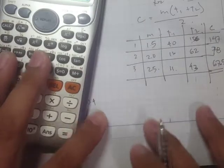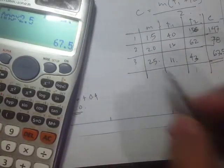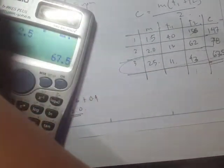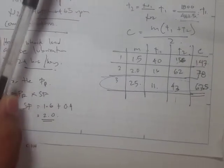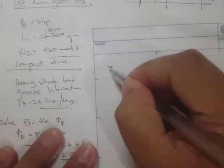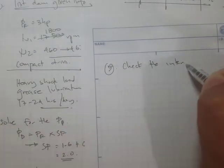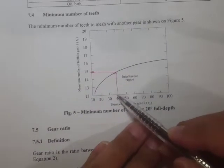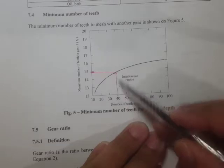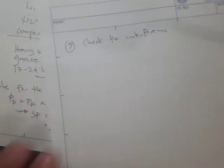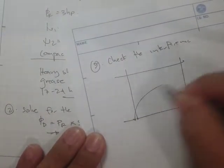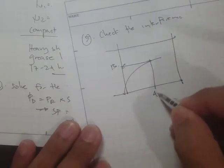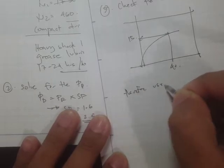We can make more selections if needed, but let's check interference. In the module 2.5 selection we have 43 teeth for the driven, so the minimum number of teeth for the pinion should be checked. From the interference table with 43 teeth on the gear, the minimum pinion teeth is around 40. But we selected 11, which is not acceptable — the minimum should be 15. So use 15 teeth for the driver.